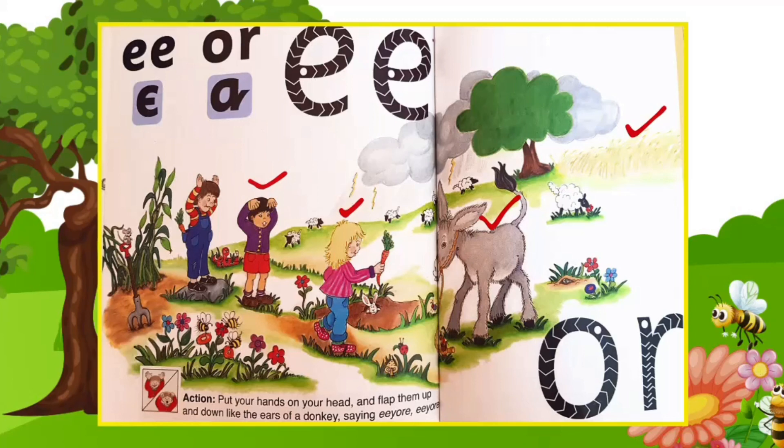As the children talk to the donkey, big rain drops begin to fall. Behind the children is an enormous rain cloud. I think we had better get home quickly, says Jakeem. There is a storm coming. We will have to run home as fast as we can. The children run off, waving to the donkey. And this is the end of our story.